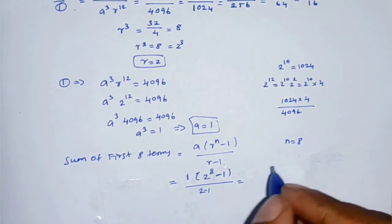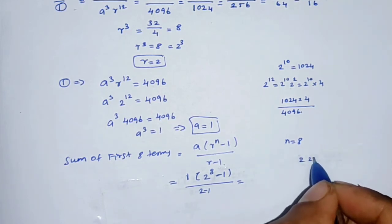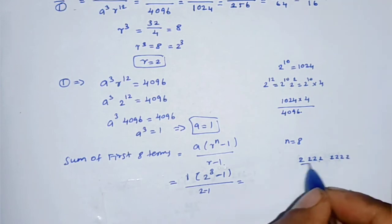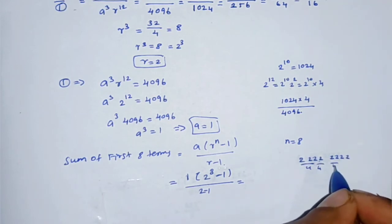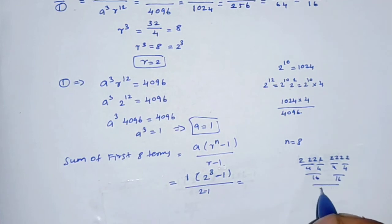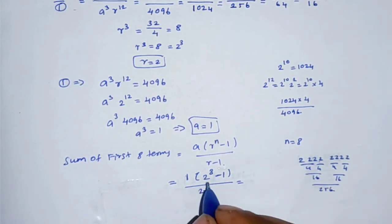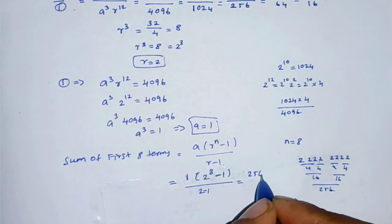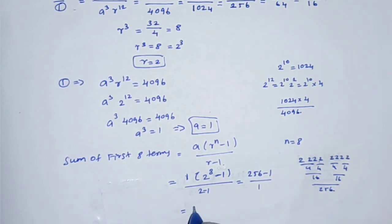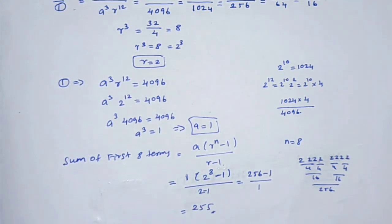Substituting: S = 1 × (2⁸ - 1)/(2 - 1). Now 2⁸ = 2×2×2×2×2×2×2×2 = 4×4×4×4 = 16×16 = 256. Therefore S = (256 - 1)/1 = 255. The sum of the first 8 terms is 255.